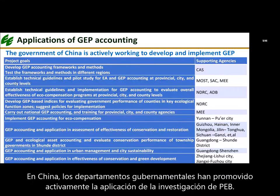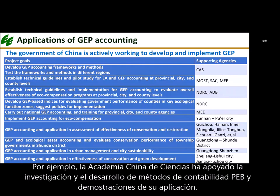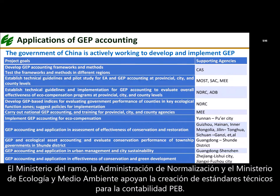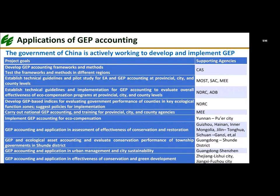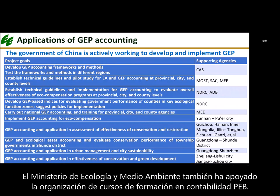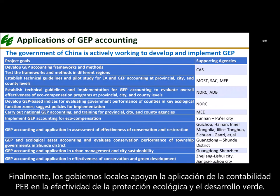In China, government departments have actively promoted the application of GEP research. The Chinese Academy of Sciences has supported research and development of GEP accounting methods. The Ministry of Science and Technology, the Standardization Administration, and the Ministry of Ecology and Environment have supported the creation of technical standards. The NDRC and the Asian Development Bank have backed methodology to apply GEP accounting to eco-compensation policies at provincial, municipal, and county levels. Local governments have supported application of GEP accounting to evaluate the effectiveness of ecological protection and green development.